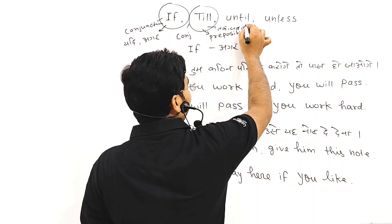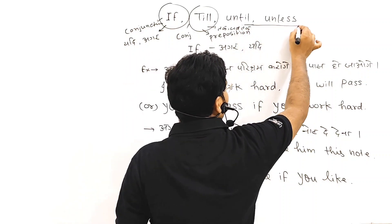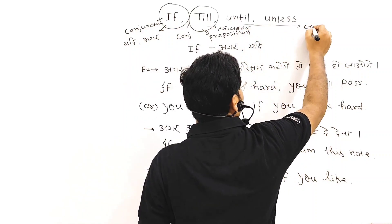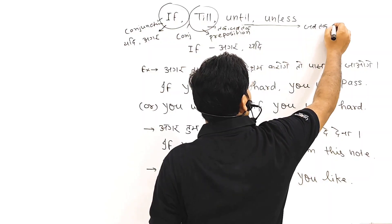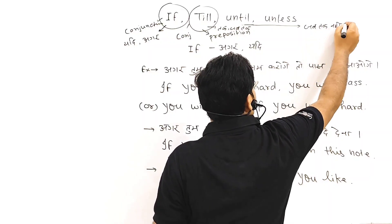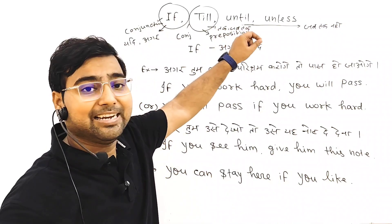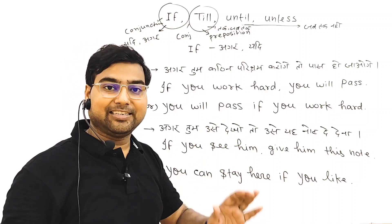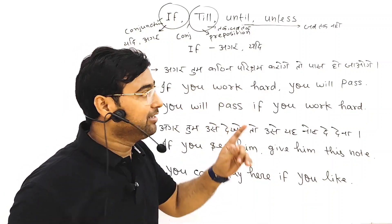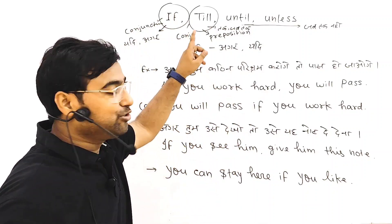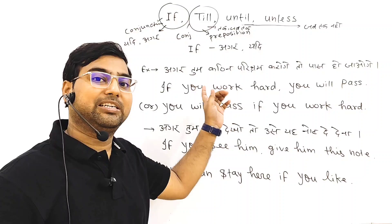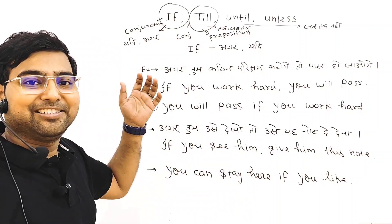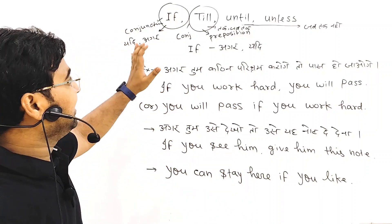Until and unless dono ka matlab hota hai 'jab tak nahi.' Until and unless dono negative conjunctions hote hain — inke saath 'not' ka use nahi hota. Similarly, when till is used as a conjunction, 'not' is also not used with till. Let's discuss each one by one.